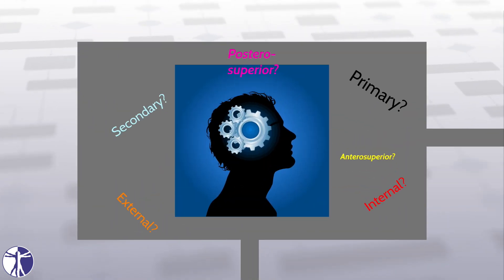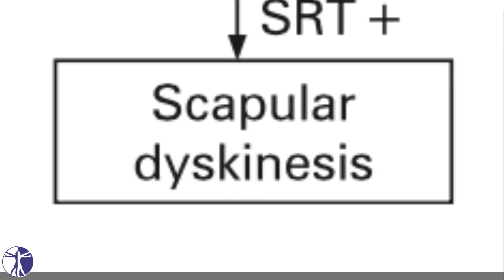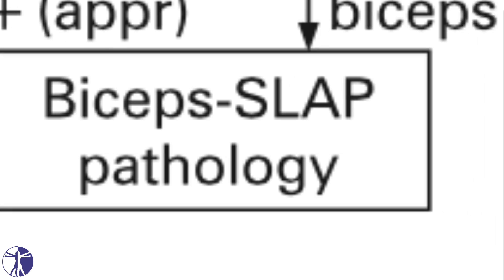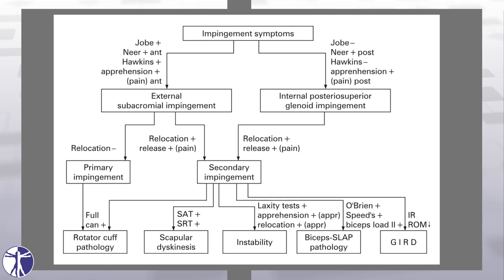With all this information, you might ask yourself how to correctly identify the underlying pathological mechanism in a patient who presents with impingement symptoms. Coles et al. from 2008 have developed an algorithm for clinicians that should assist you in the assessment of impingement patients. Based on the outcomes of different clinical tests, you can narrow down to one of the aforementioned pathological mechanisms: rotator cuff pathology, scapular dyskinesis, shoulder instability, biceps pathology, SLAP lesions, and glenohumeral internal rotation deficit. Click on the different boxes to get to the respective video where we outline the specifics of each test. You can also click on the link in the description to start a playlist.